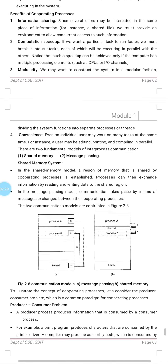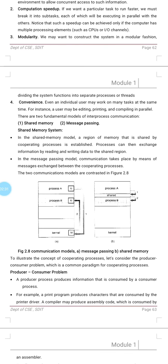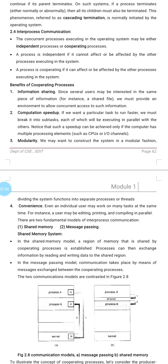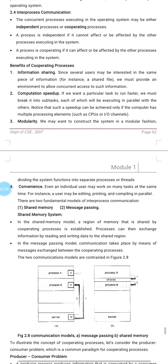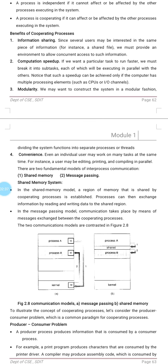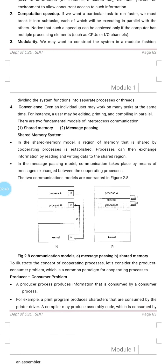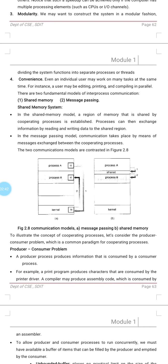This is an important question: define independent as well as cooperating processes and state the benefits of cooperating processes. Next, we'll go to the two fundamental models of inter-process communication — also a very important question asked many times. The two fundamental models are shared memory and message passing.